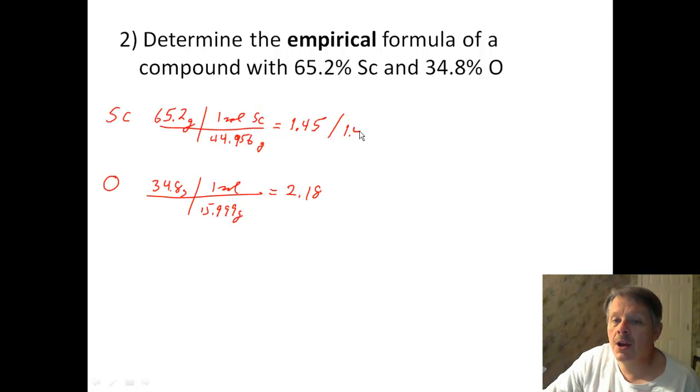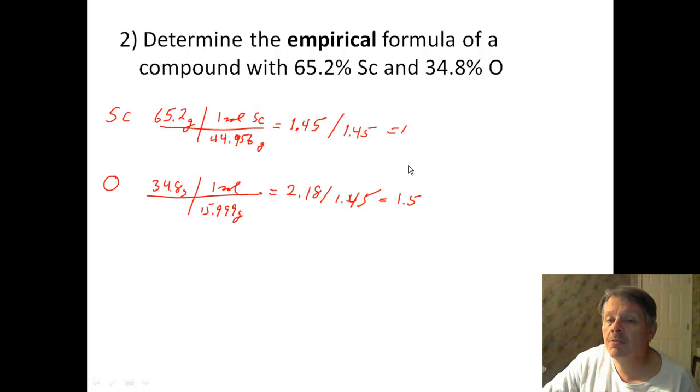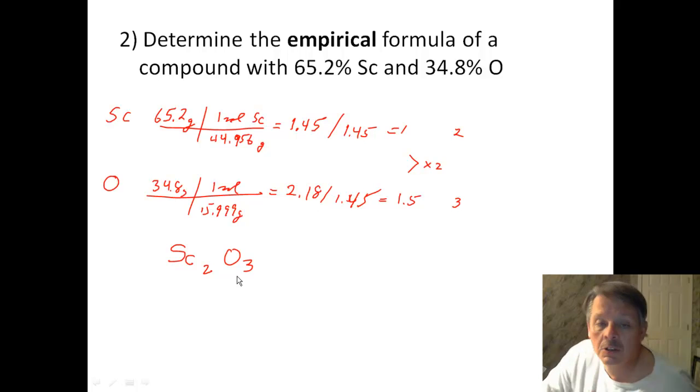So I take this and now I have to divide by the smaller ones. So 1.45 is smaller. So your top thing is equal to 1. And your bottom thing is equal to 1.5. So clearly I have to multiply by 2 to get rid of the 1.5. So that's going to be 2. And that's going to be 3. So my final answer is going to be Sc2O3. And that is my lowest whole number ratio, or my empirical formula.